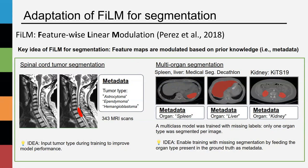To enable training with missing segmentations, we can pass as information which organ is present in the ground truth. Hence, the model will predict only the segmentation passed as metadata. This way, the model will learn to segment the different organs even if labels are missing.